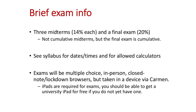Some exam info: we have three midterms, 14% each, and a final exam. The midterms are not cumulative — midterm one covers chapters one through three, midterm two covers chapters four through six, midterm three covers chapters seven through nine. We get through chapter 12 in the class, so chapters one through twelve are cumulative for the final exam. The midterms just cover new material and then the final exam goes back to being cumulative.